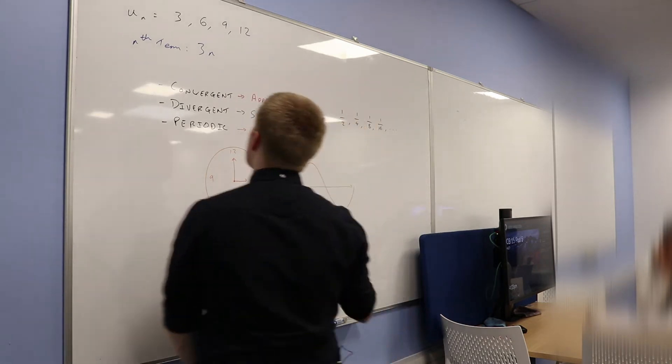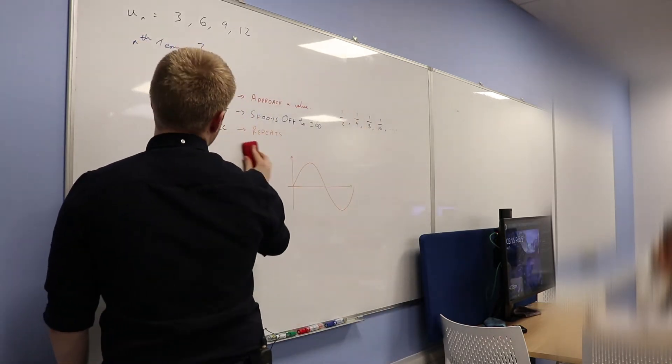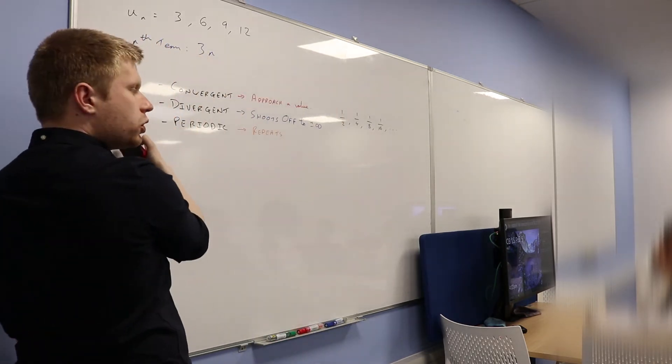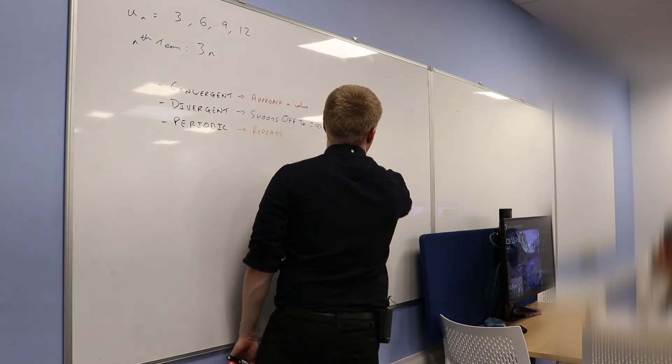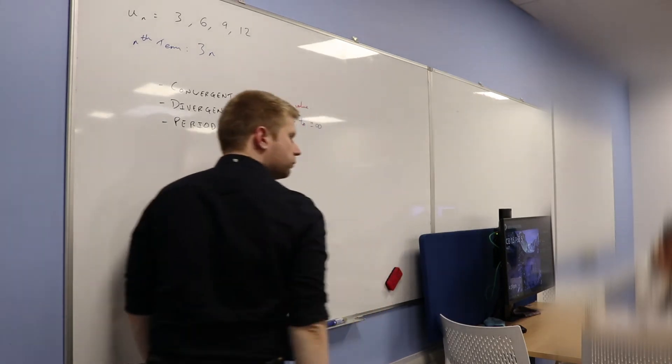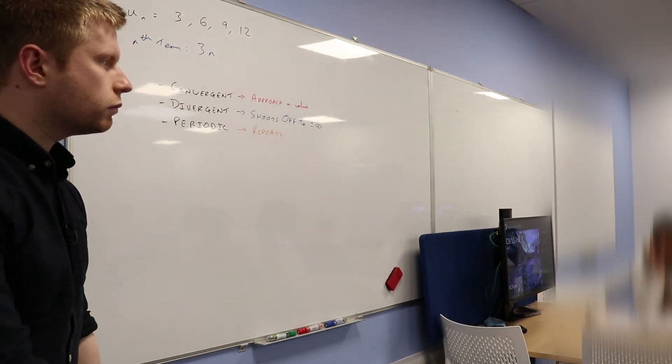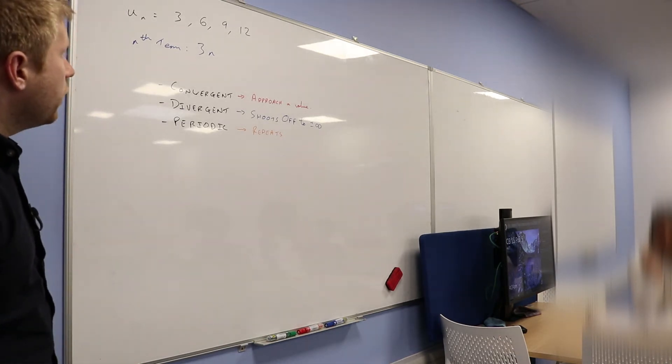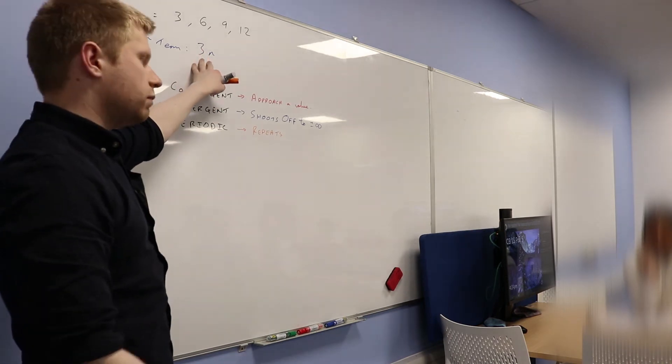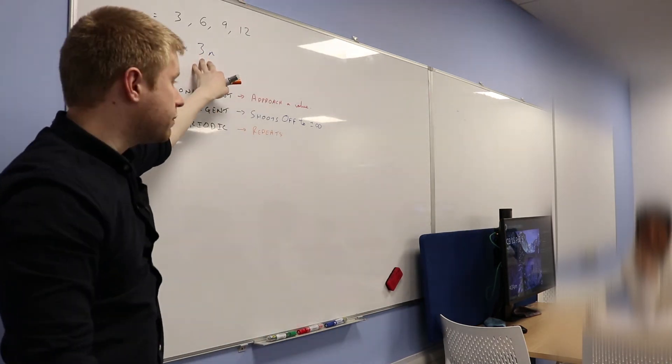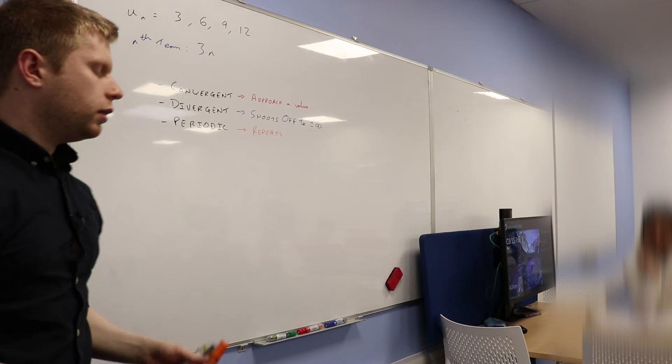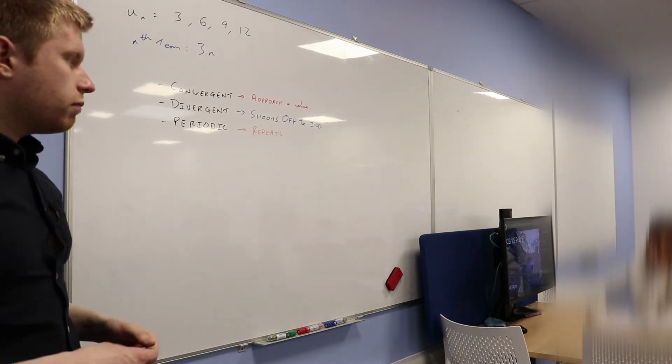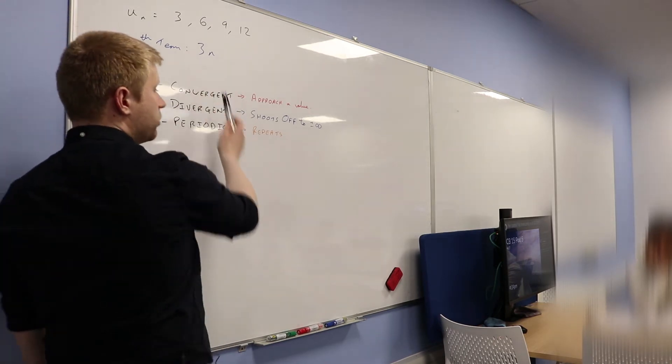So let's see if we can think about what this thing will do. So 3n. Would this be convergent, divergent, or periodic? What do we reckon? I would say it's divergent, yeah. How could we check? So how could we check that this thing either shoots off to plus or minus infinity? How could we check? Yeah, why not? Let's just stick some values in and see what happens.